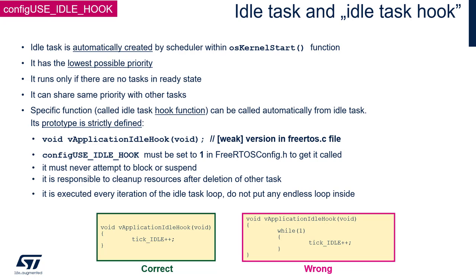This function must be as short as possible. It should not block or wait for anything, and it cannot contain any endless loop, as shown in the picture. When using STM32CubeMX or STM32CubeIDE code generators with hook functionality enabled, an empty weak function will be created within FreeRTOS.c, including a description of the rules concerning the function's role, structure, and usage.